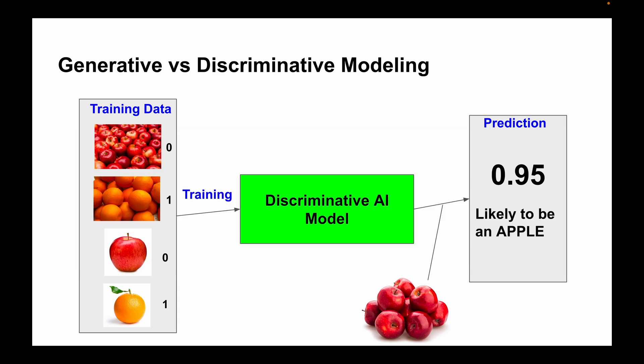Let's understand discriminative modeling with the help of this example. Suppose we have two fruits, namely apples and oranges. With enough data we can train a discriminative model to predict whether an unknown fruit is an apple or an orange. Our model could learn shape, size, color, and other features of fruit.